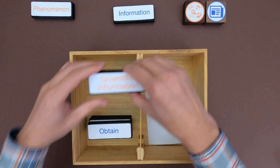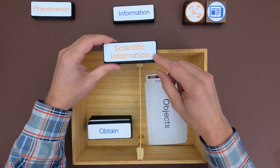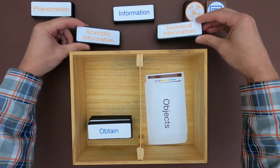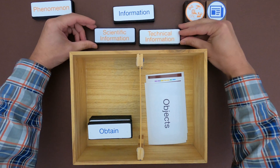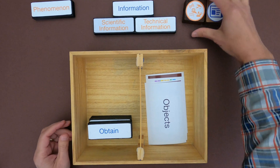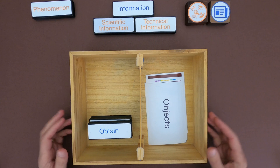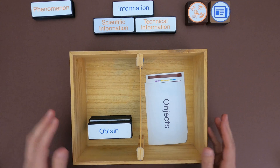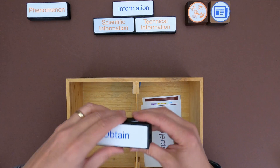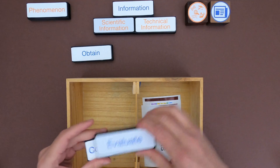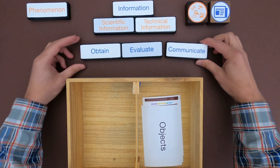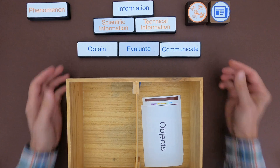In this case, that information will come in two different types. We have scientific information — that's information based on observations and experiments. Then we have technical information — that's going to be more like methods, procedures, and specifications, and that's more important in engineering. But in both cases, you'll obtain the information, then evaluate the information, and then integrate and communicate that information.